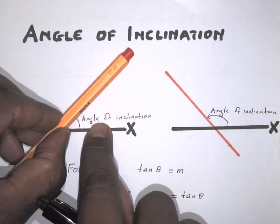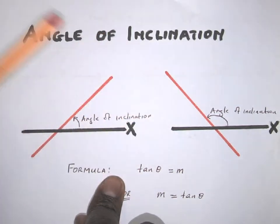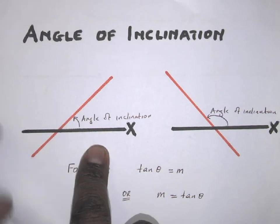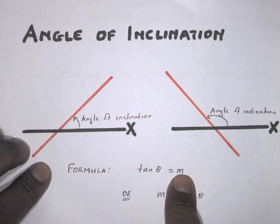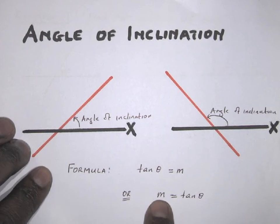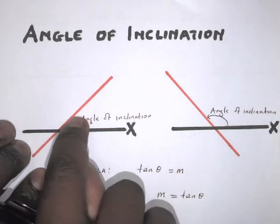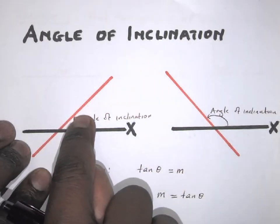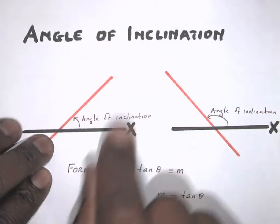It's always above the x-axis because we measure angles like that. To work out the angle of inclination, we use the formula tan theta equals m, where m is the gradient or slope of the line. Sometimes we may be asked to find m, meaning the gradient of the line. So if I know the size of the angle of inclination, I'll be able to find the gradient or slope of that line.